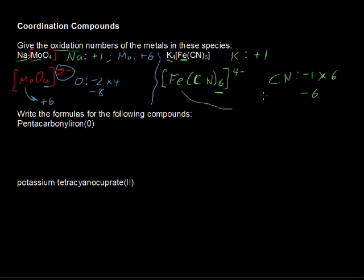Well, then iron must have a charge of +2. So I'll write that up here. Iron, the oxidation number of iron then is +2. Good. We've got the oxidation numbers for those.